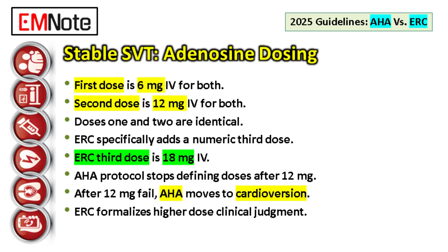The variation appears if those two standard doses fail. The AHA protocol essentially stops defining doses there. But the ERC specifically adds a numeric option for a third dose: 18 milligrams intravenously. The ERC acknowledges some patients just need more drug and defines that higher dose numerically, giving providers a clear next step if 12 milligrams doesn't convert the rhythm. If you're following ERC, you have a clear path up to 18 milligrams before moving to synchronized cardioversion. Under AHA, after that 12 milligram dose fails, you'd likely move straight to synchronized cardioversion.